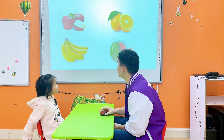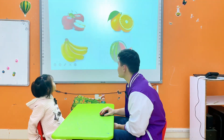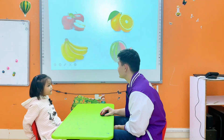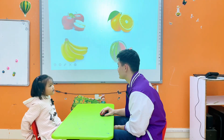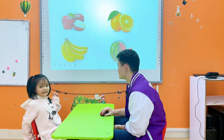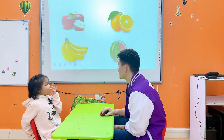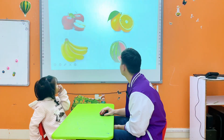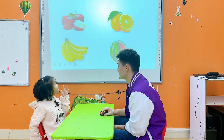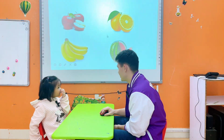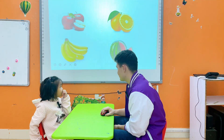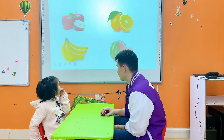Look at the board. What is it? Apple. What color is it? Red. What is it? Orange. What is it? Banana. What color is it? Yellow.